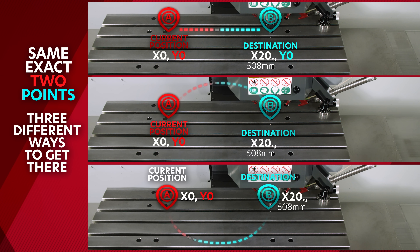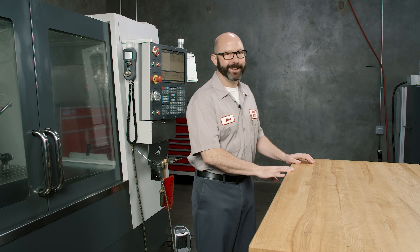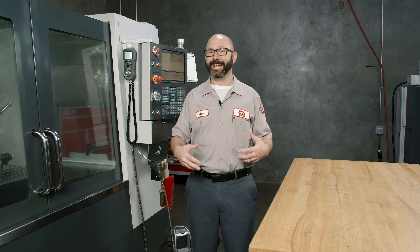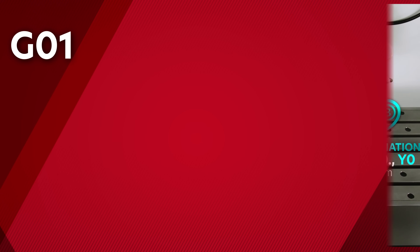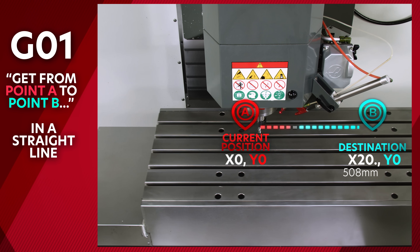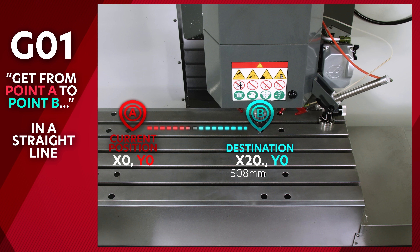Well, that is it — and thanks for watching this Haas Tip of the Day. Not so fast. It's easy, but not that easy. G1 is pretty simple — it carries our tool from point A to point B in a straight line. But G2 and G3 do have some complexity to them that needs to be looked at.